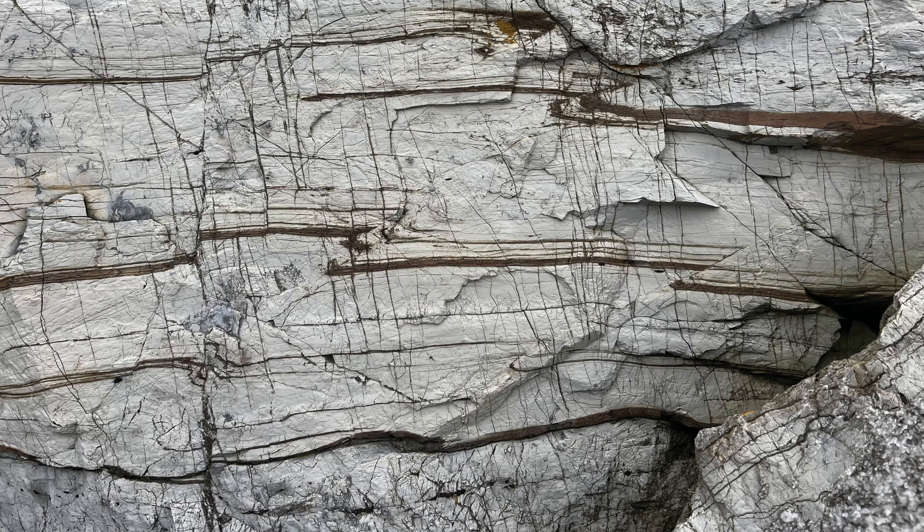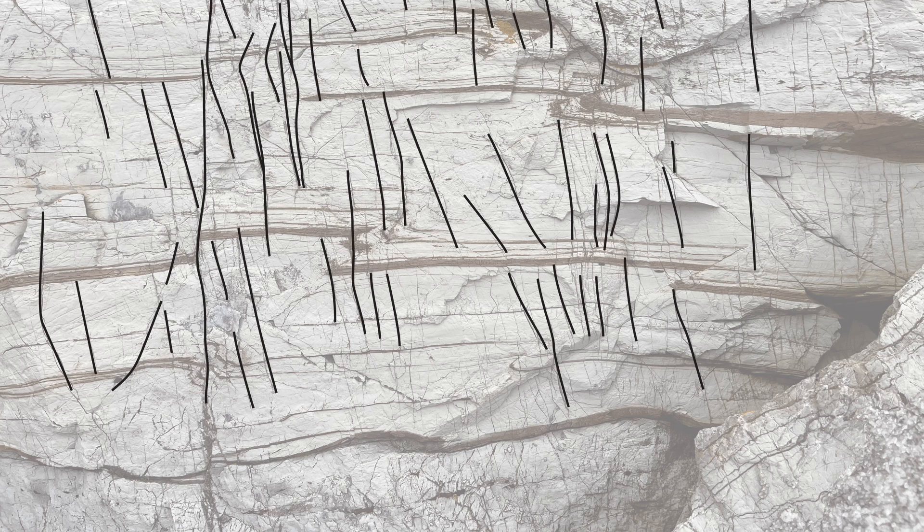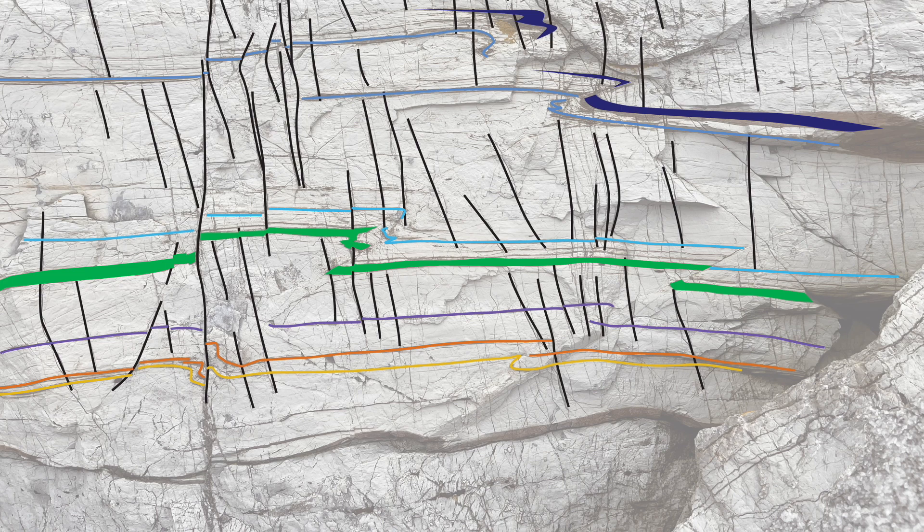We can build up an interpretation of these structures together. Running up and down the image are lots of fractures, and we can identify bedding, the primary layering, which is locally offset, faulted by some of these vertical fractures.